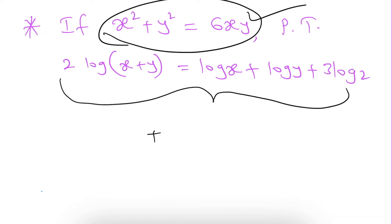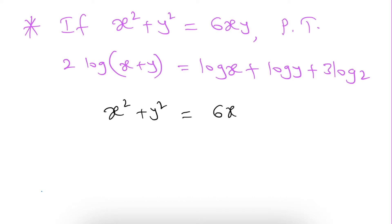Now if we observe this, in this all are positive terms only, so we need to add 2xy. So, x square plus y square equals 6xy. For this, we need to add 2xy.